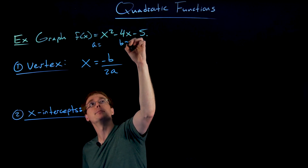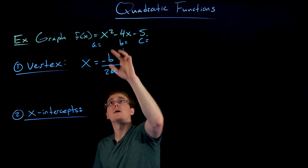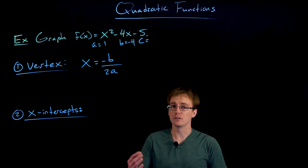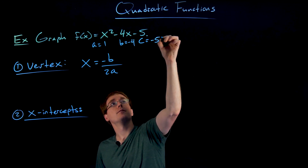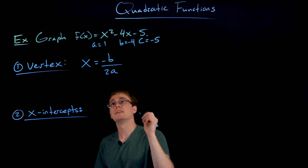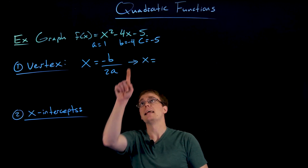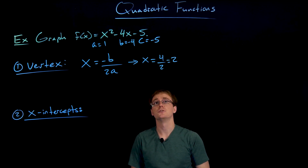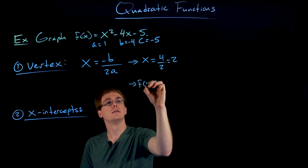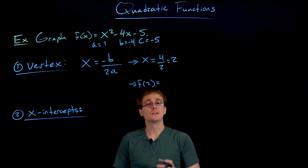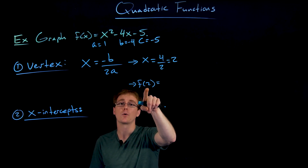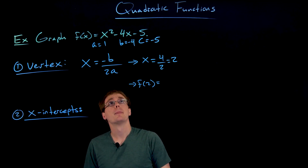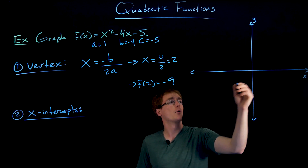We identify a, b, and c: a is the leading coefficient — the number in front of x², which is 1; b is the linear coefficient — the number in front of x, which is -4; and c is -5. The x-coordinate of our vertex is -b / 2a = 4 / (2×1) = 2. To find the y-coordinate, we plug x = 2 into our function: f(2) = 2² - 4(2) - 5 = -9. So our vertex is the point (2, -9).